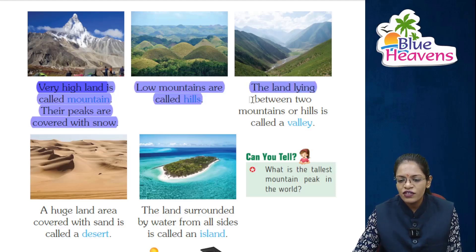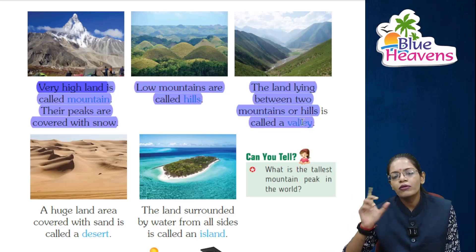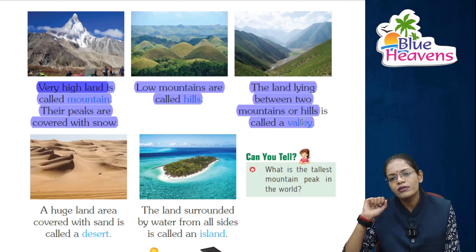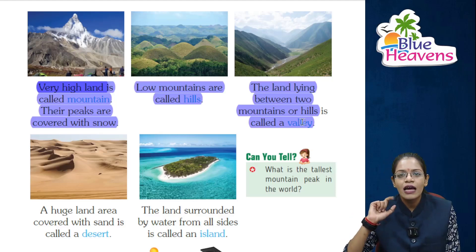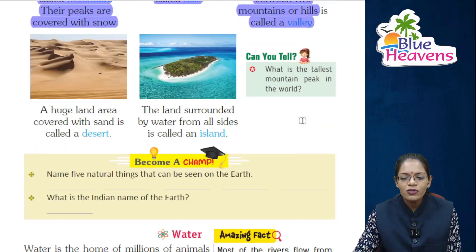The land lying between two mountains and hills is called a valley. A valley is the path or passage found between mountains and hills.